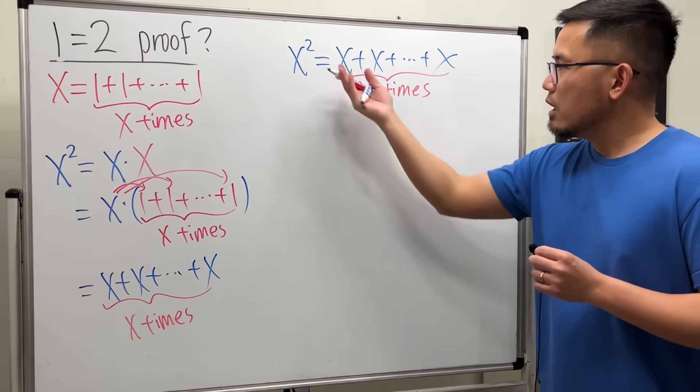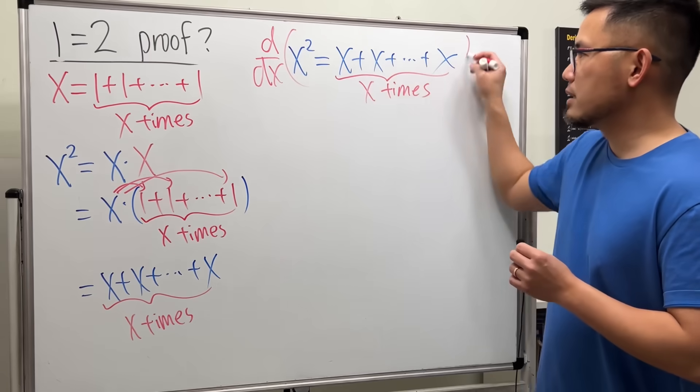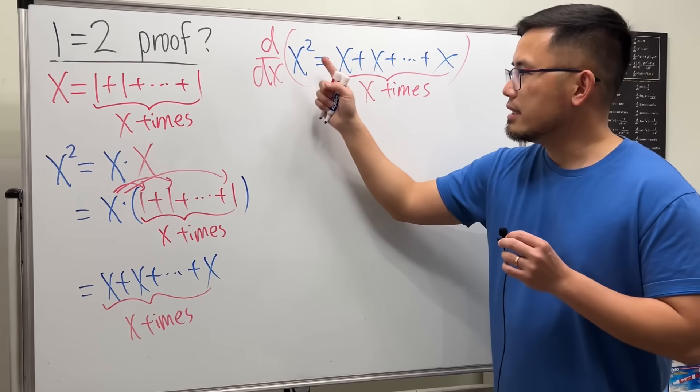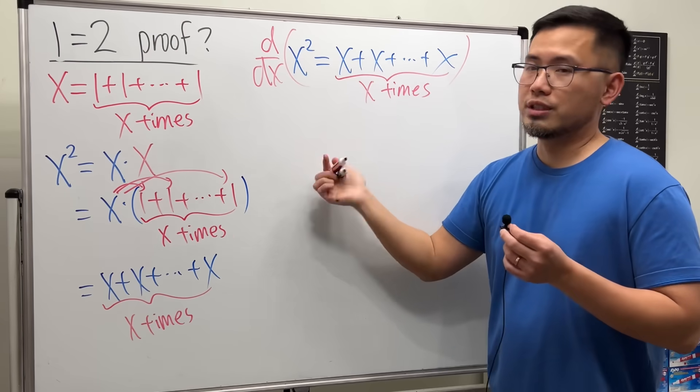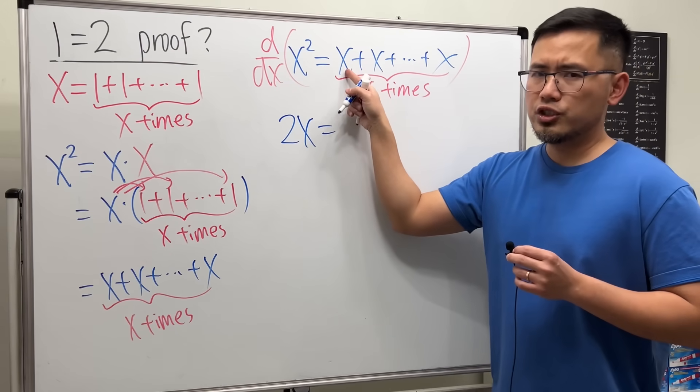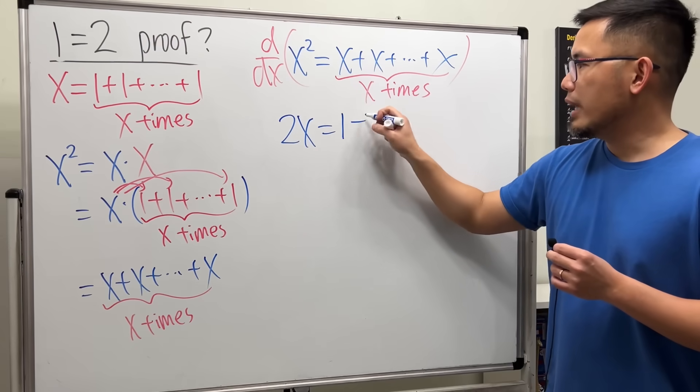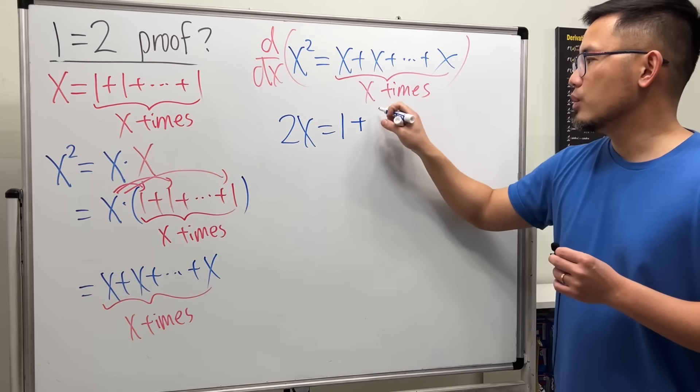Take a look at this. We are going to differentiate both sides with respect to X. On the left-hand side, taking the derivative of our X squared, we just get 2X. On the right-hand side, when we differentiate X, of course we get 1, so this is 1.